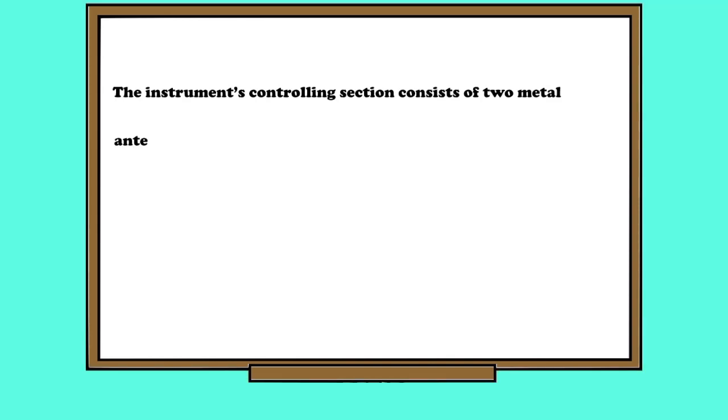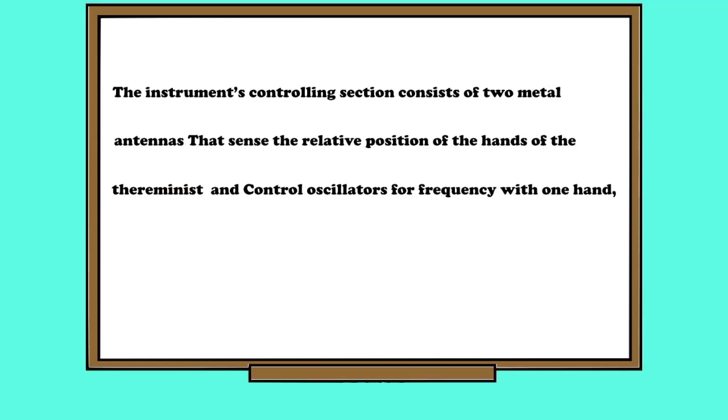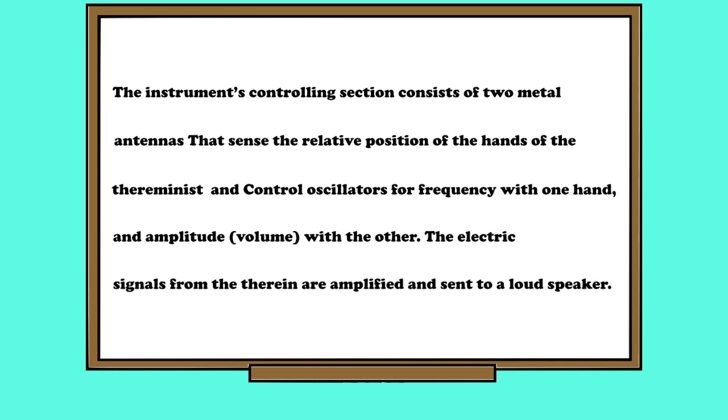The instrument controlling section consists of two metal antennas that sense the relative position of the hands of the thereminist and control oscillations for frequency with one hand and amplitude volume with the other, which are amplified and sent to a loudspeaker.